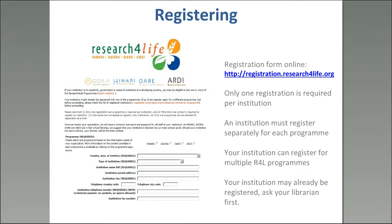For those asking about logging on and registering: there is a joint registration form online for all four programs. You only need to register once per institution, and we ask that you talk to a librarian first — they'll normally know if you're already registered and will have the username and password to share within the institution. Never share passwords online. You can register for more than one program at once. For countries with the $1,500 access fee per year, that amount covers access to all four programs, not just one.